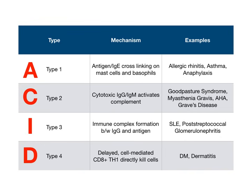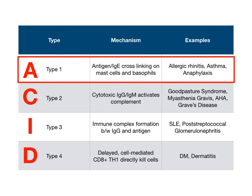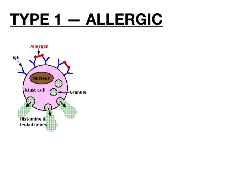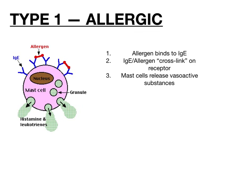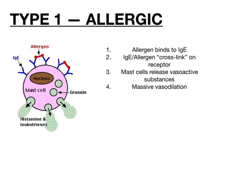Let's get started with type 1 hypersensitivity. This one is referred to as allergic hypersensitivity. Basically, what happens is that first an antigen binds to IgE. Then IgE and that allergen get cross-linked at the FC receptor. After the cross-linking occurs, mast cells and basophils release vasoactive substances, and those vasoactive substances cause massive vasodilation. In the context of an allergic reaction or anaphylaxis, that's why we give epinephrine — to stop the vasodilation, because epinephrine causes vasoconstriction.